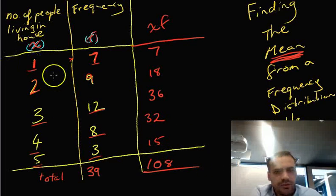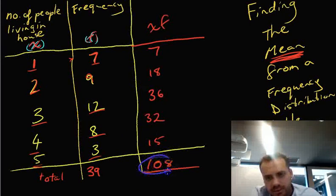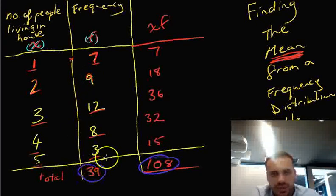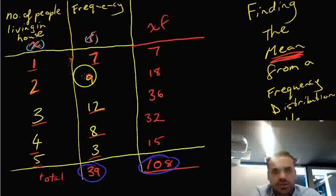Now that we've got our third column here, our XF column, these two numbers here are the really important numbers. The total frequency, 39, so that was the number of houses we surveyed, and 108, which is actually the total number of people altogether. So there were seven houses with one person, nine houses with two people, etc.